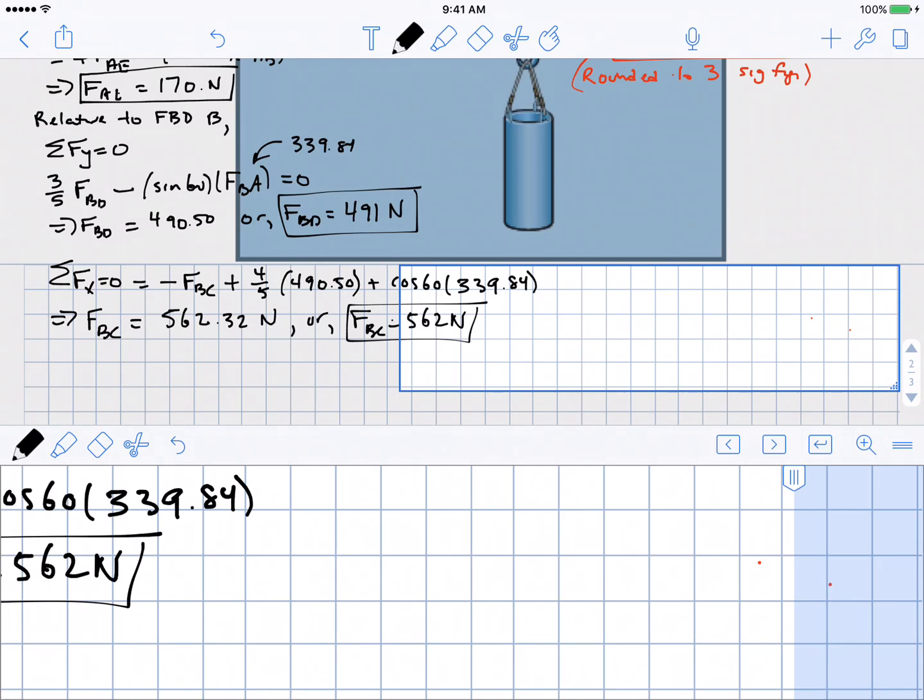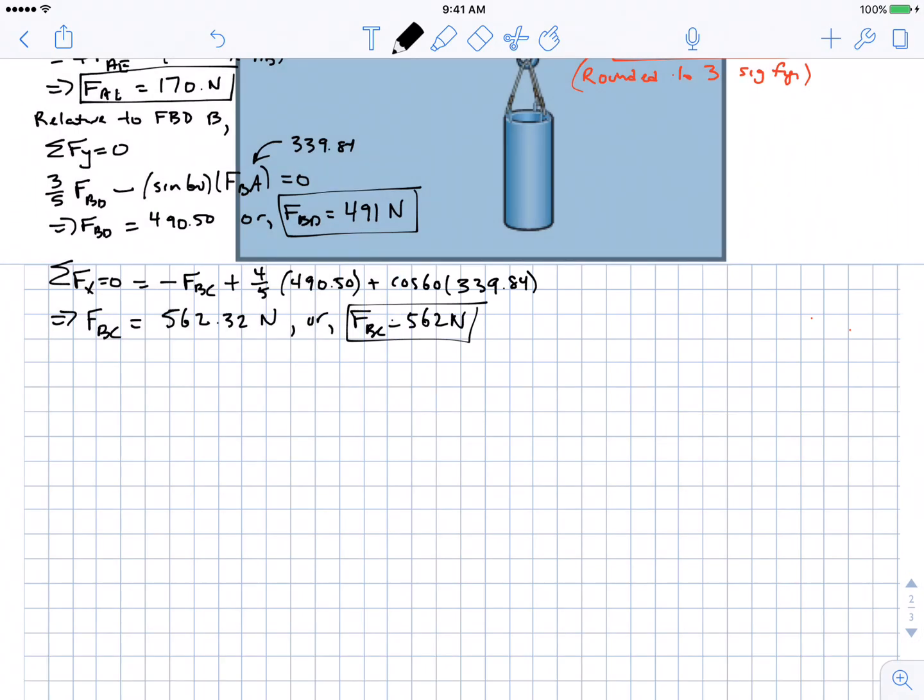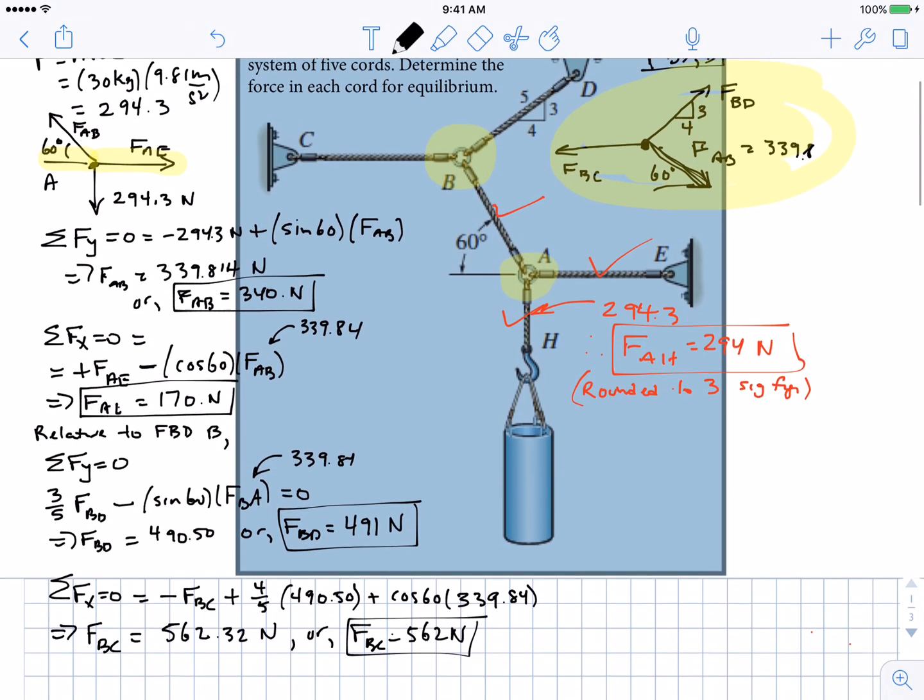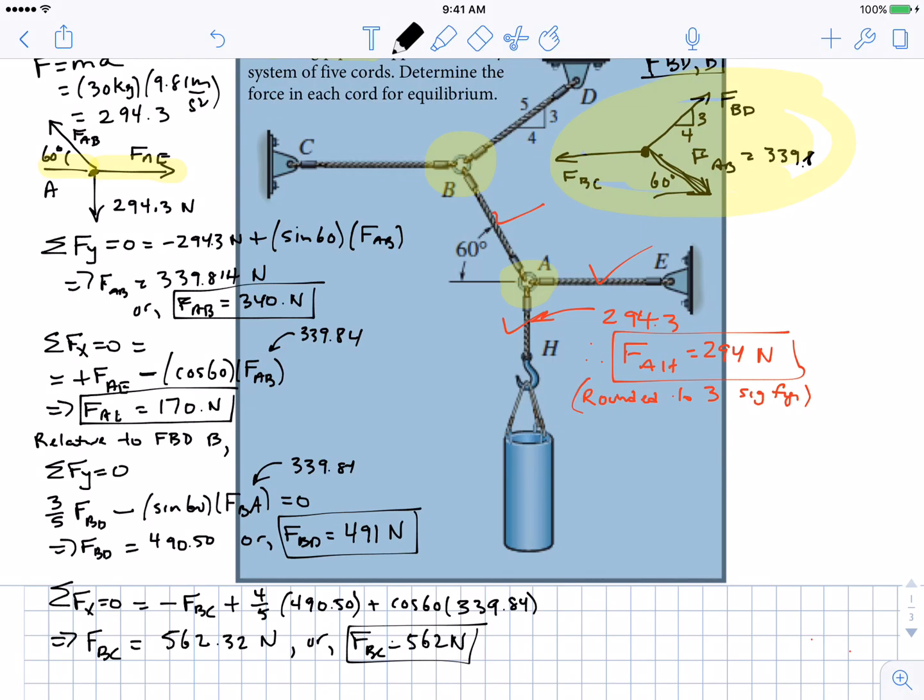So we, big picture, have solved the problem. We found FBD, all done with FBD, all done with FBC. We found all our five things. We have boxes around five things. And so we are done with this problem. Thanks very much.